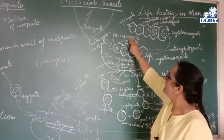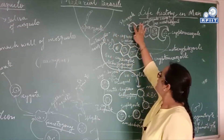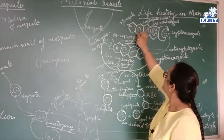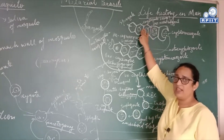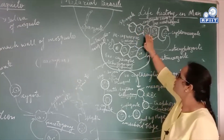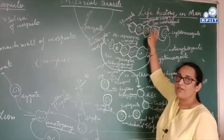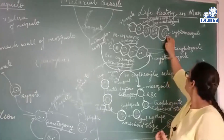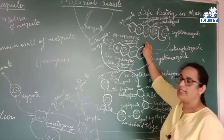In the first phase, pre-erythrocytic schizogony, the sporozoites travel to the liver cells of the human and invade these cells. After entering the liver cells, the sporozoite becomes round in shape and is now called a cryptozoite. It takes around eight days to become a cryptozoite. Then nuclear division takes place: the cryptozoite nucleus divides multiple times, and every nucleus gains its cytoplasmic membrane, resulting in individual cryptomerozoites. These are the products of pre-erythrocytic schizogony.